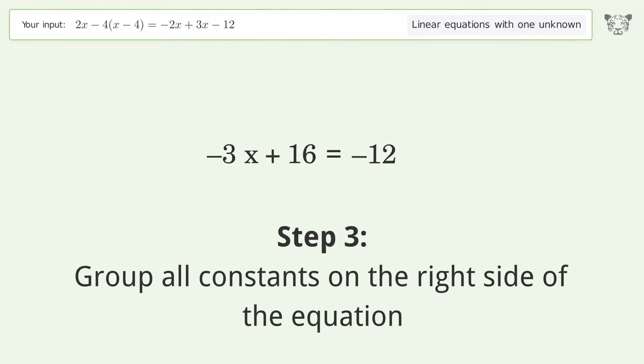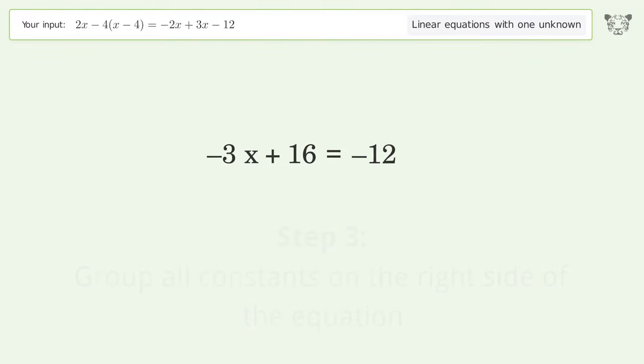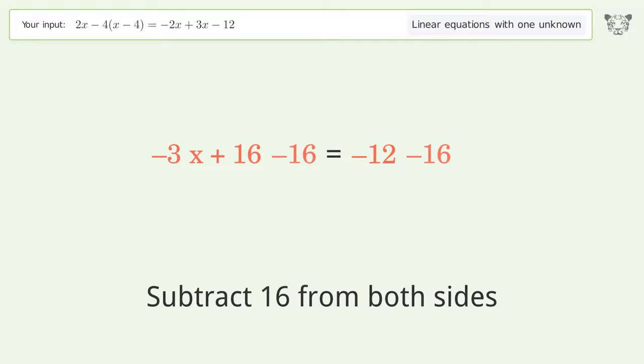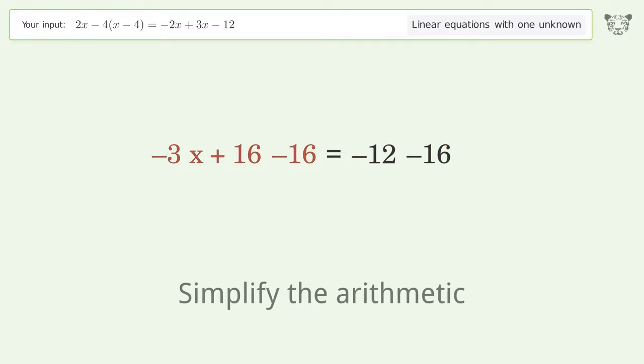Group all constants on the right side of the equation. Subtract 16 from both sides. Simplify the arithmetic.